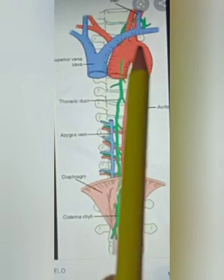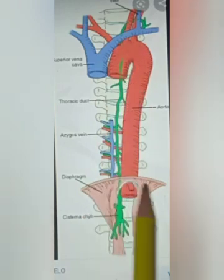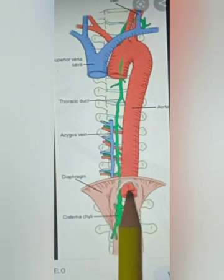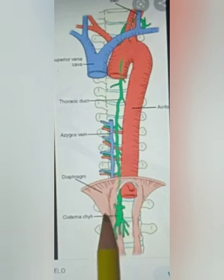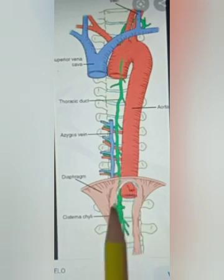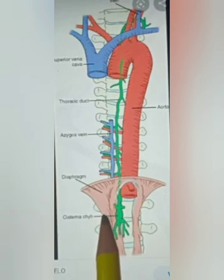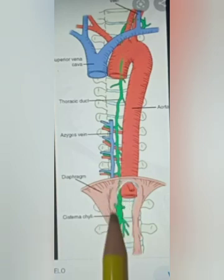Looking at the anatomy: this is the arch of aorta, descending thoracic aorta, the diaphragm, the aortic opening of the diaphragm, and the abdominal aorta. The cisterna chyli is the lymphatic sac, 5 to 7 cm long, present to the right of the abdominal aorta. It is overlapped and hidden by the right crus of the diaphragm.